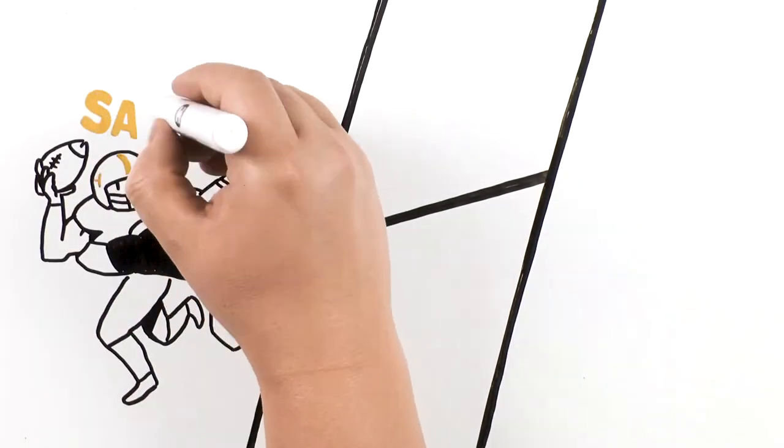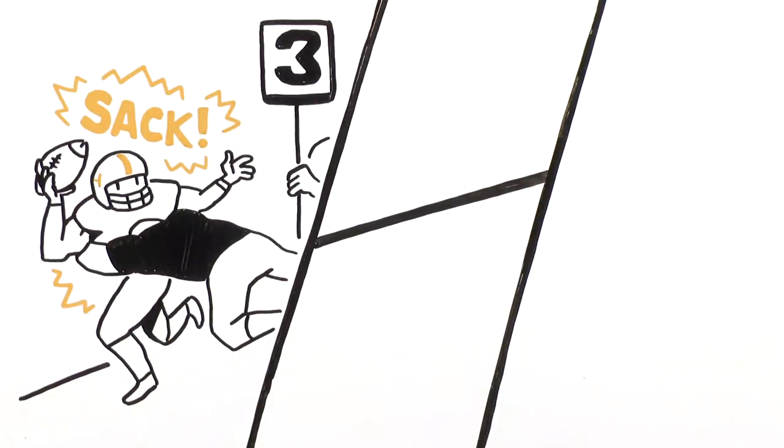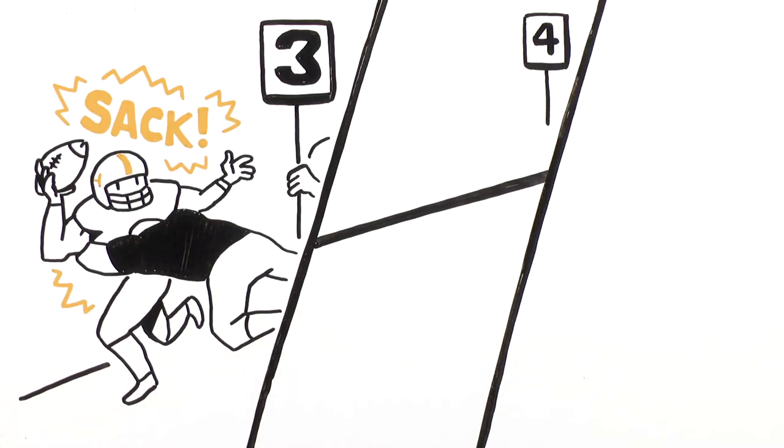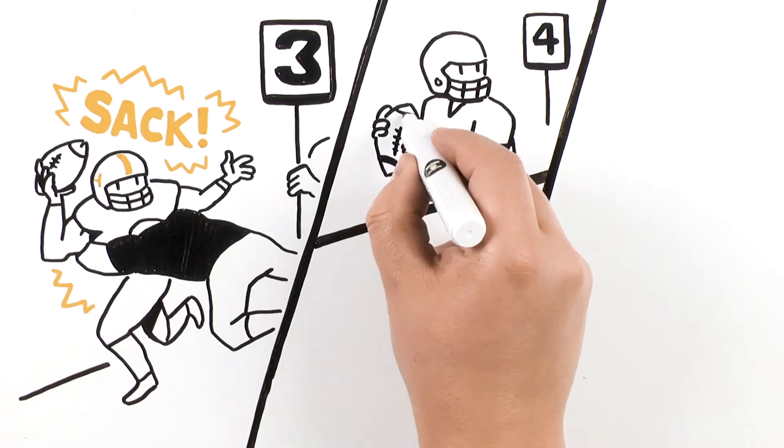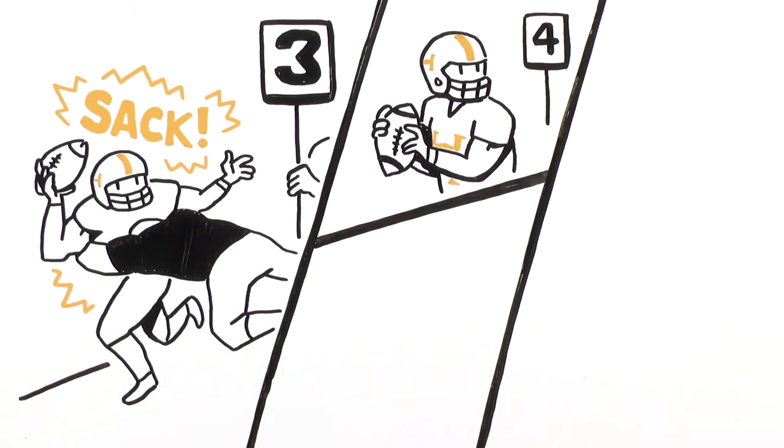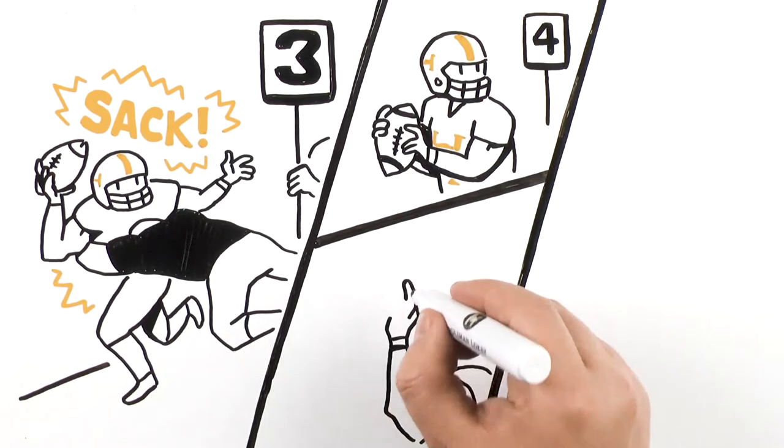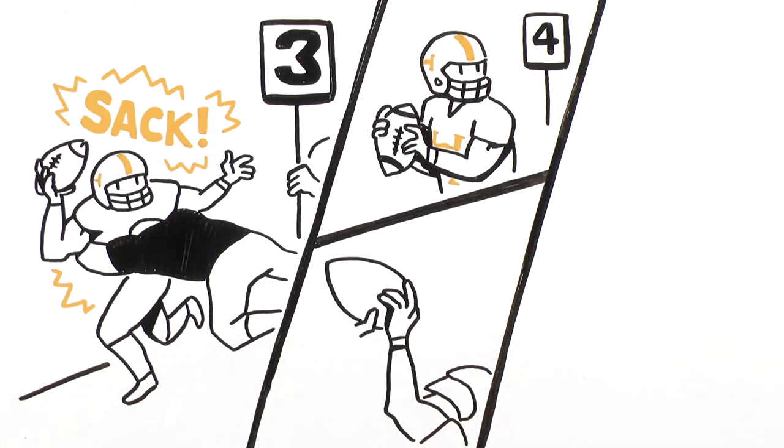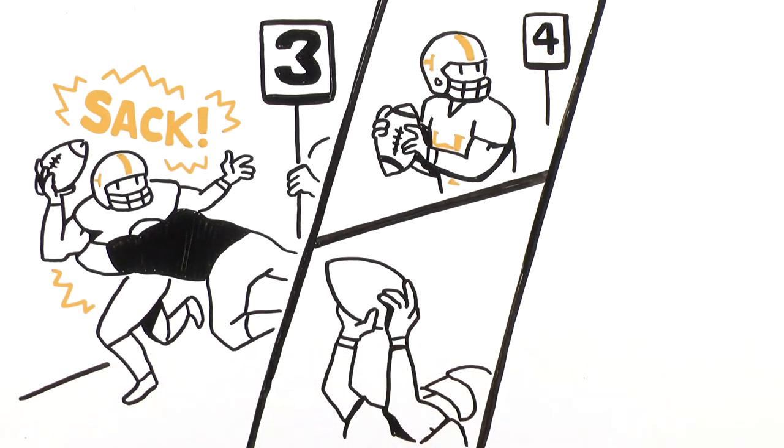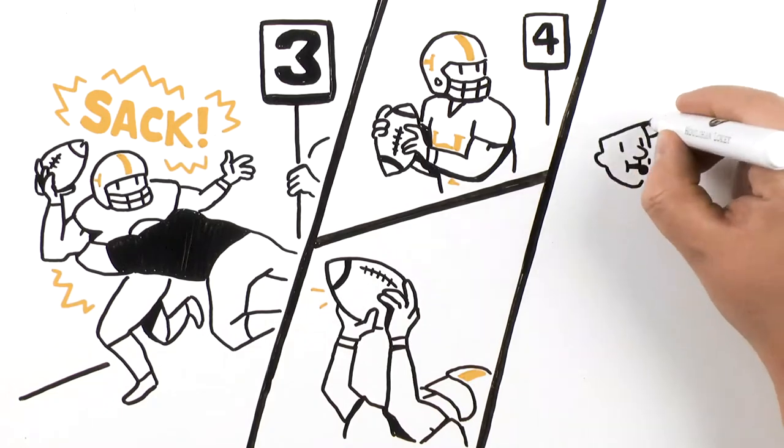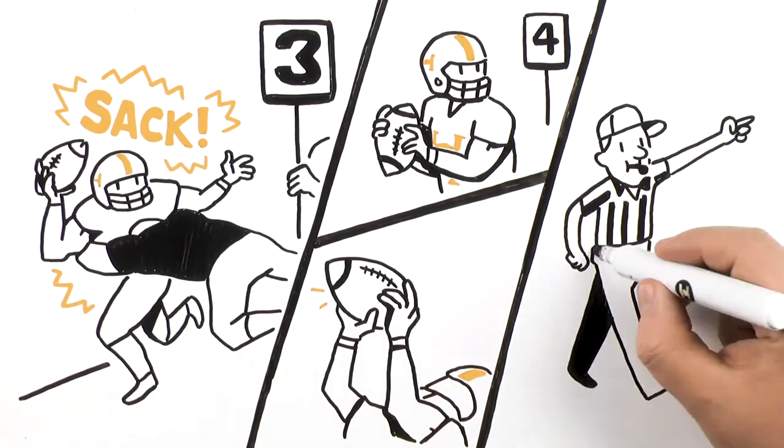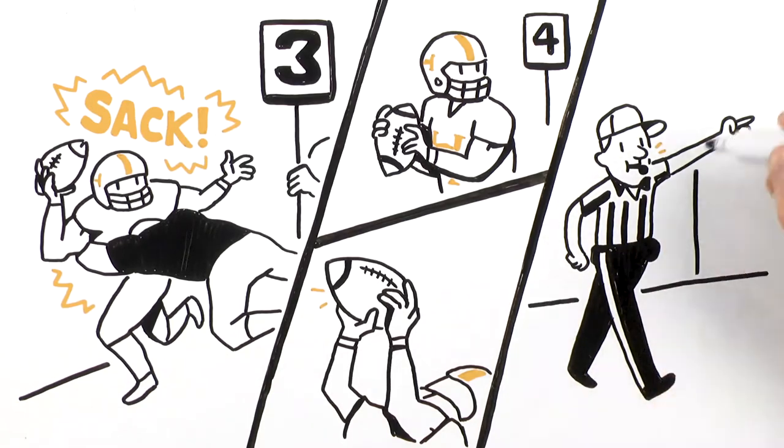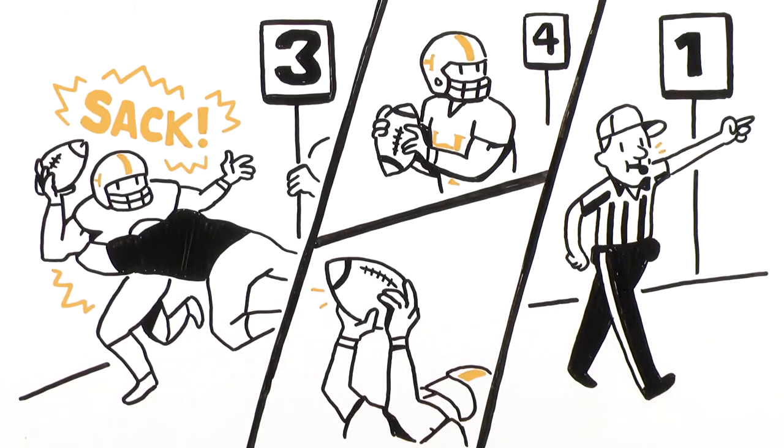setbacks such as a quarterback sack can turn a third and short into an intimidating fourth and long. Houlihan Lokey delivers specialized resources so that its partners can overcome these challenges. Our tech plus IP advisory practice is uniquely positioned to identify and unlock the value of technology and intellectual property by blending valuation, transaction, engineering, and legal expertise to help create a competitive edge for our clients both at underwriting and upon exit.